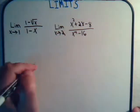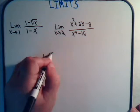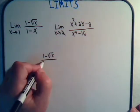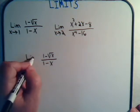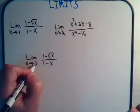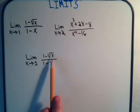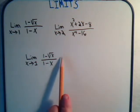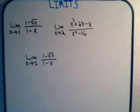Let's take the first one. We have 1 minus the square root of x divided by 1 minus x, and we want the limit as x approaches 1. If we try plugging 1 in, the square root of 1 is 1, so we get 0 in the numerator. And 1 minus 1 is 0, so we have 0 over 0 — that doesn't do us any good.